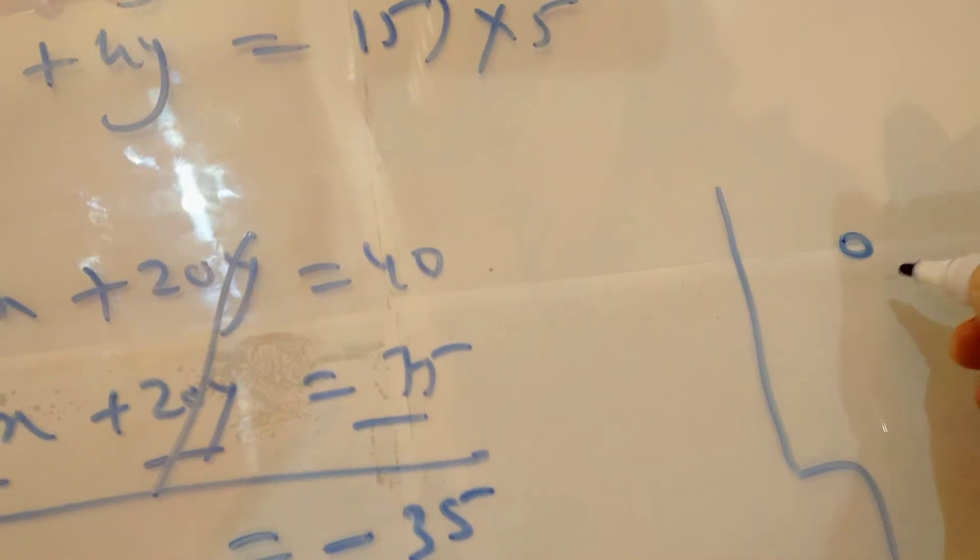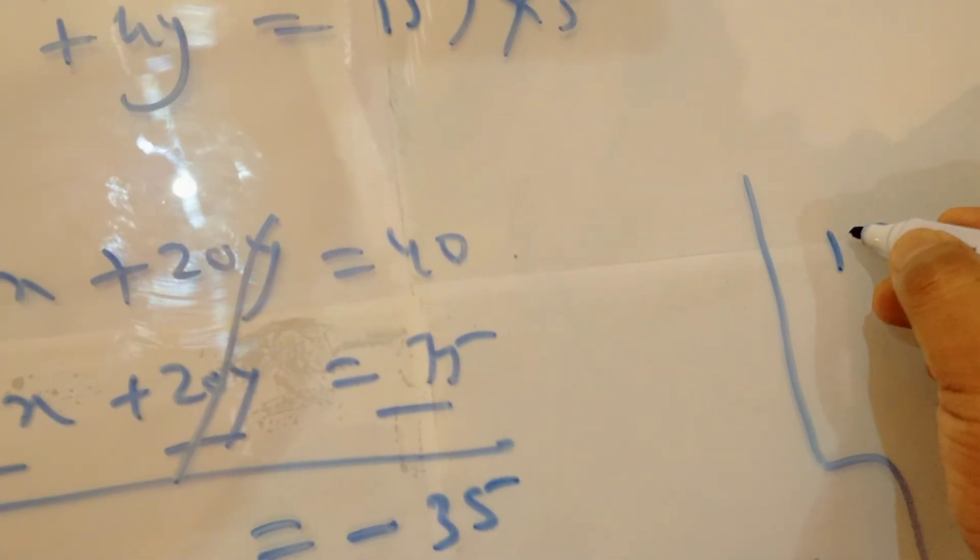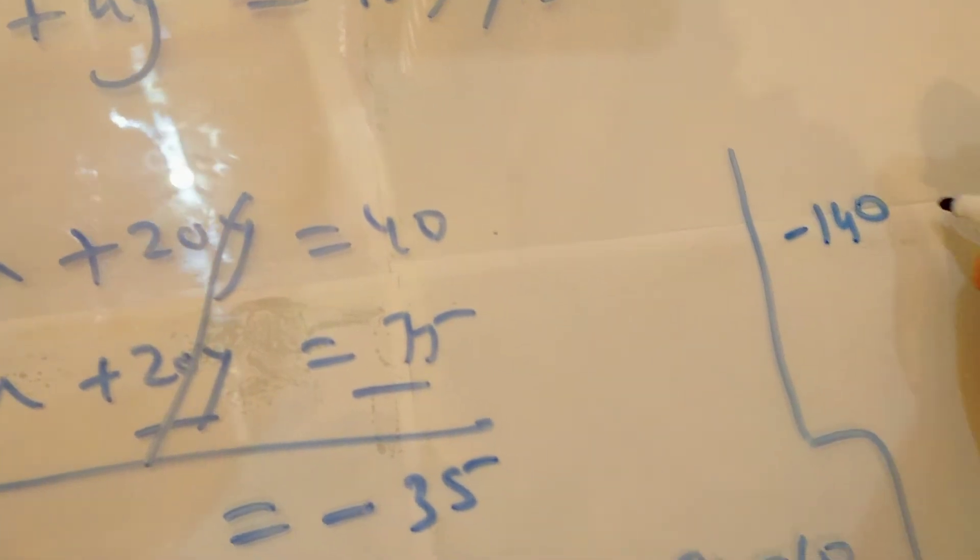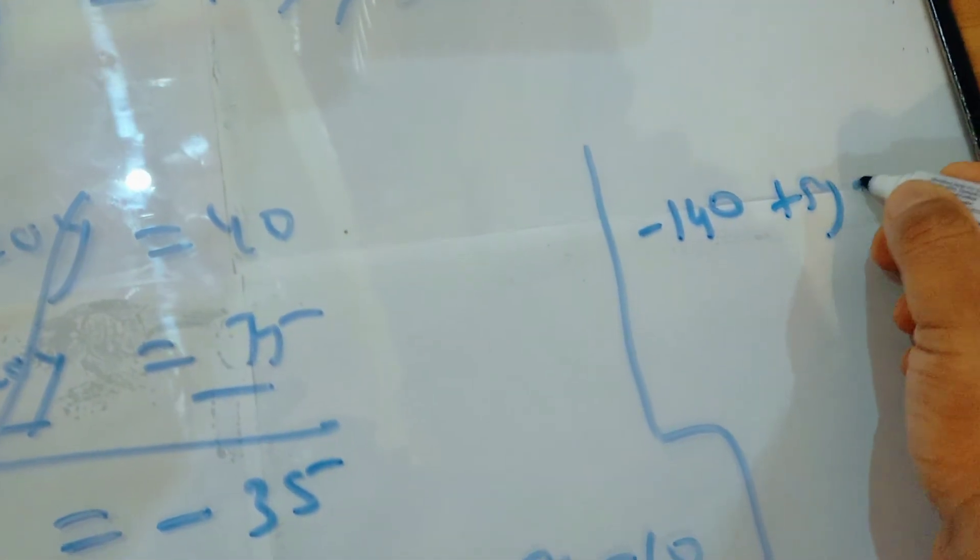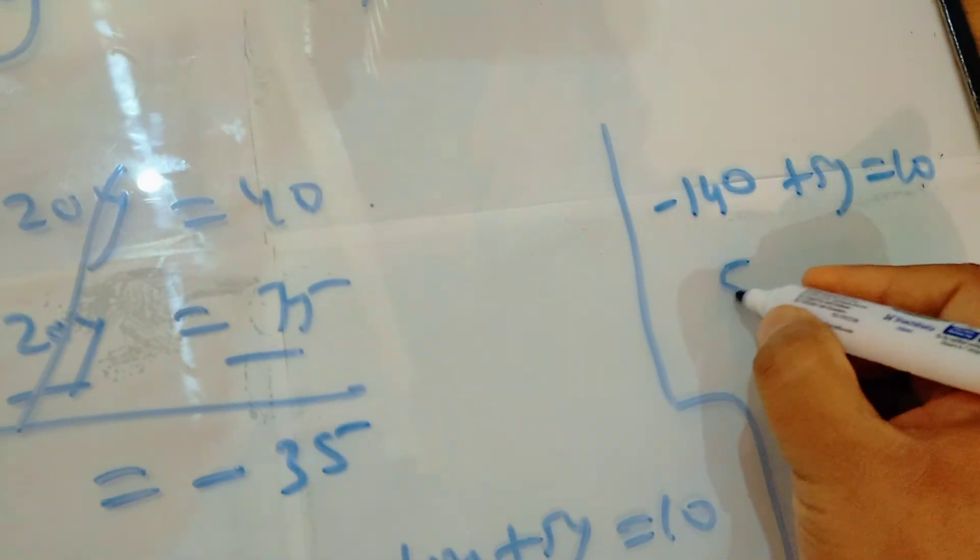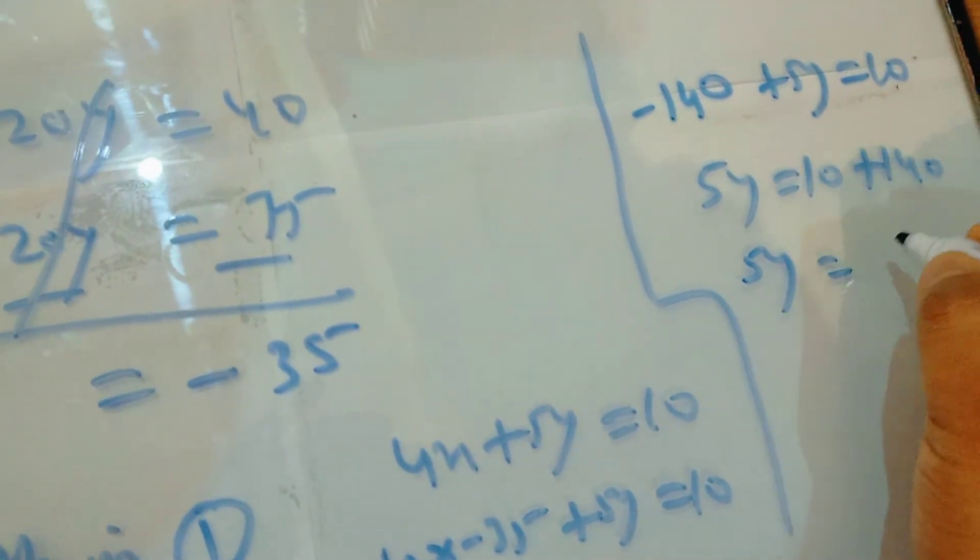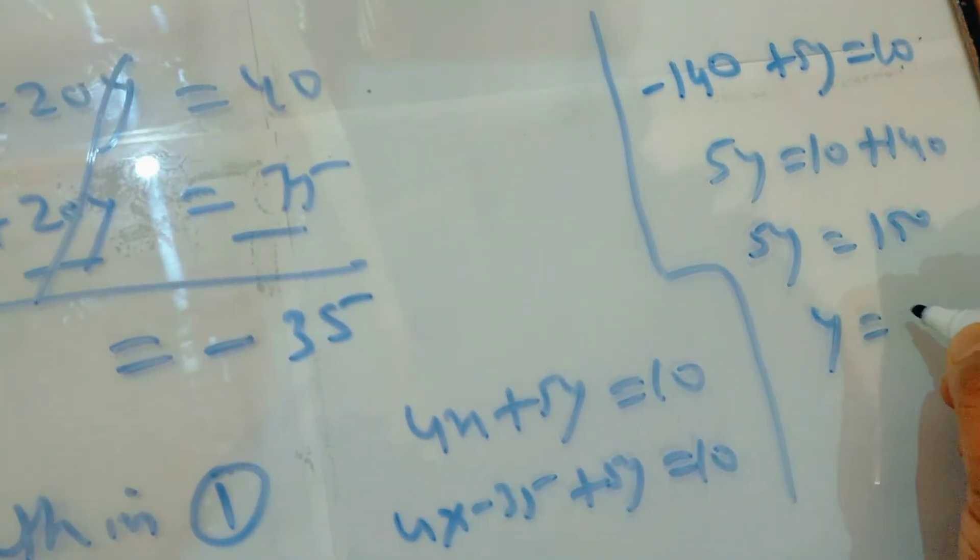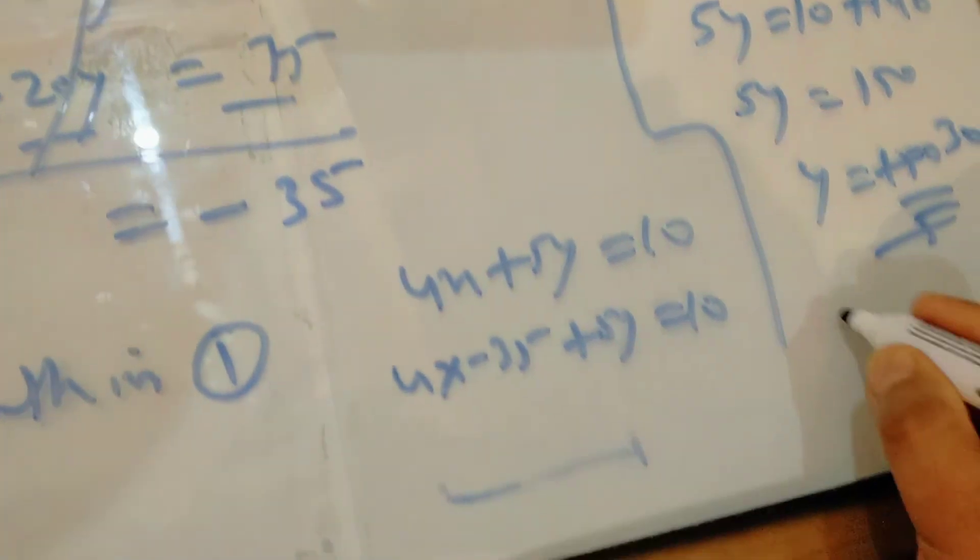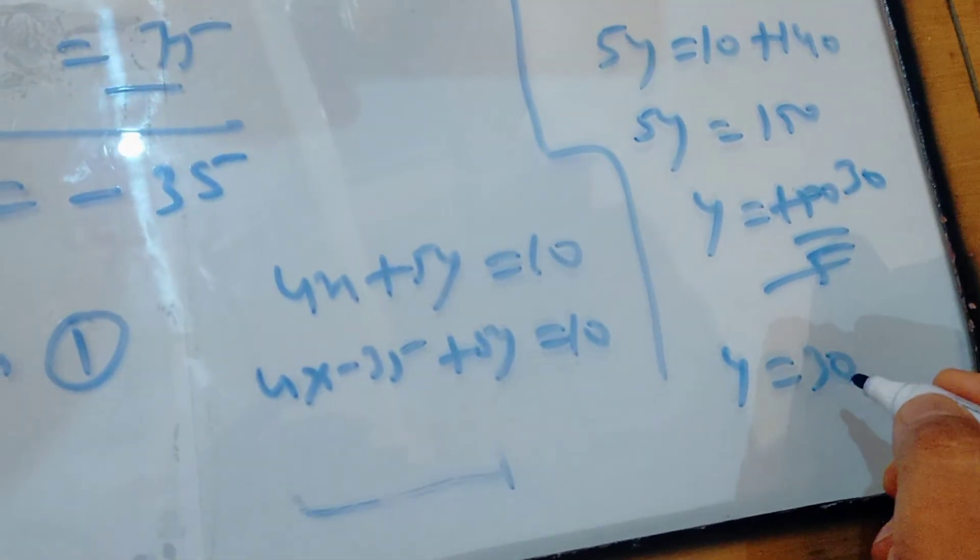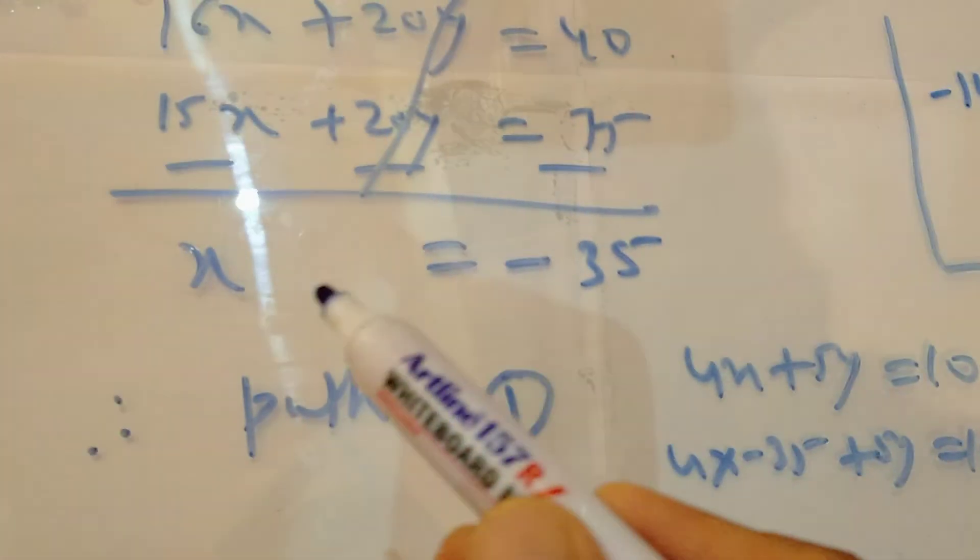4 times 35 is 140, so minus 140 plus 5y equals 10. So 5y will be 10 plus 140. So 5y equals 150, so y equals 150 upon 5, which is 30. So y equals 30.